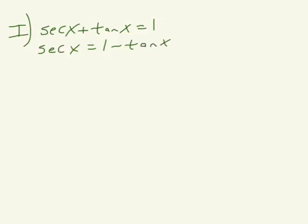We are looking for all solutions from 0 to 2 pi. So this is not a verifying identities. Solving, looking for solutions from 0 to 2 pi. The reason this is good, somewhat good, is this is looking kind of like a Pythagorean identity now.